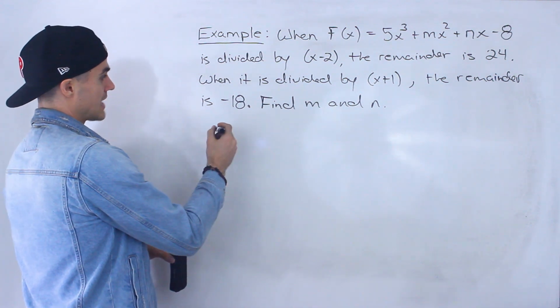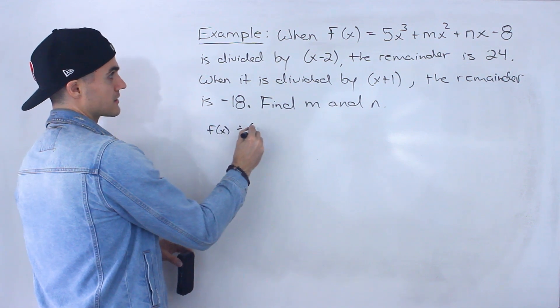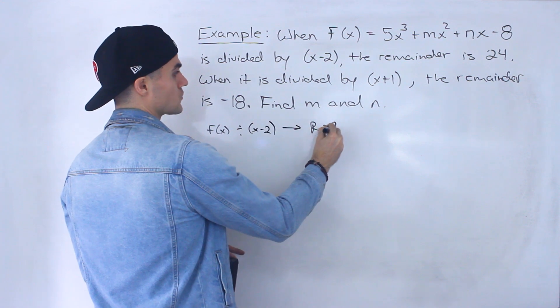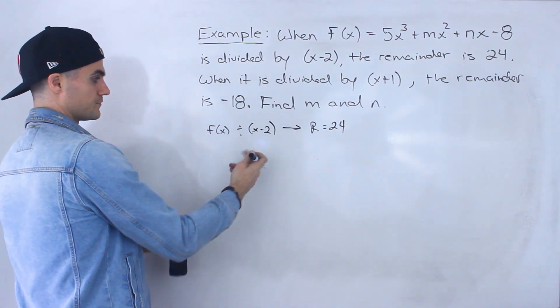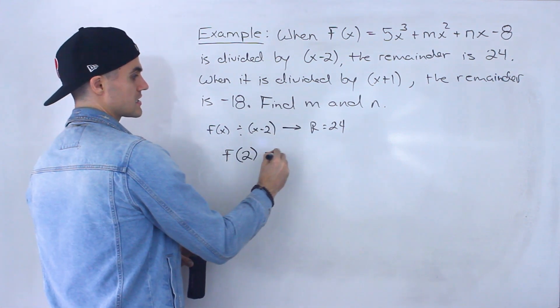And so notice that if f(x) is divided by x - 2, the remainder is 24. And so with the remainder theorem, what we can say here is that f(2) is equal to 24.